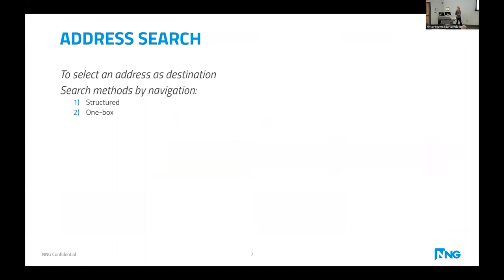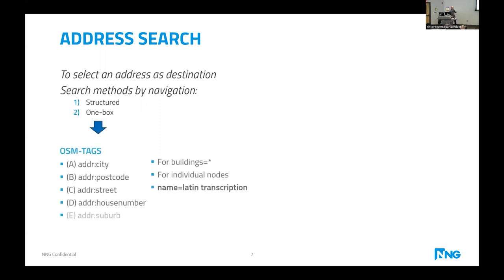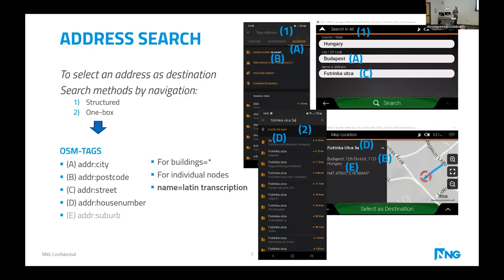Let's start with destination. The first section is searching for an address. Either we can do it with a structured solution — in a hierarchical order by city, street, and house number — or we can write everything into one box. For either solution, we have the necessary OSM text in the database. How well it is filled out depends a lot on where we check it. For example, in the US the coverage even with house numbers is very good.